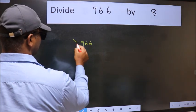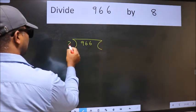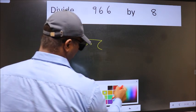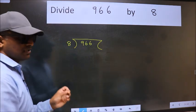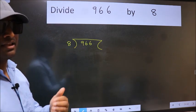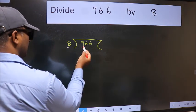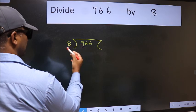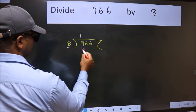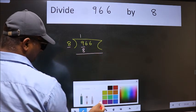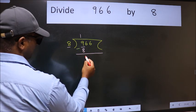966 here, 8 here. This is your step 1. Next, here we have 9 and here 8. A number close to 9 in 8 table is 8 once 8. Now we should subtract. We get 1.